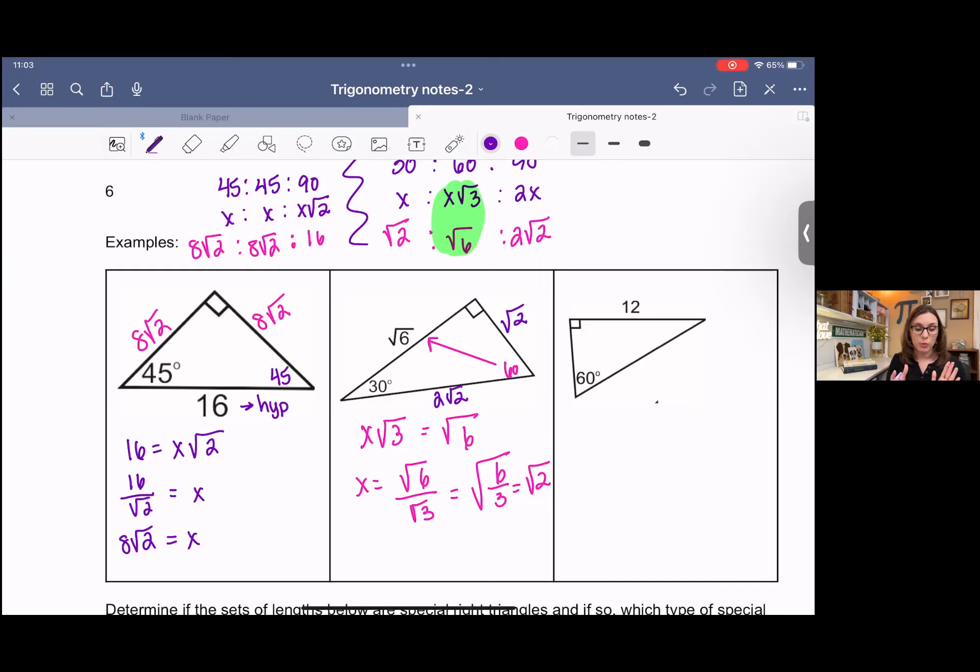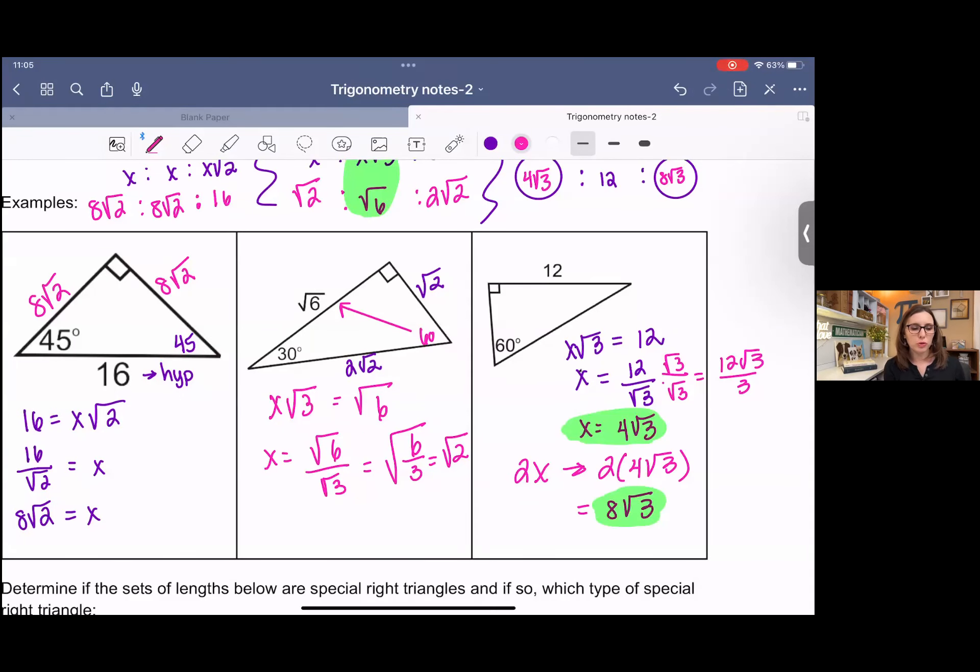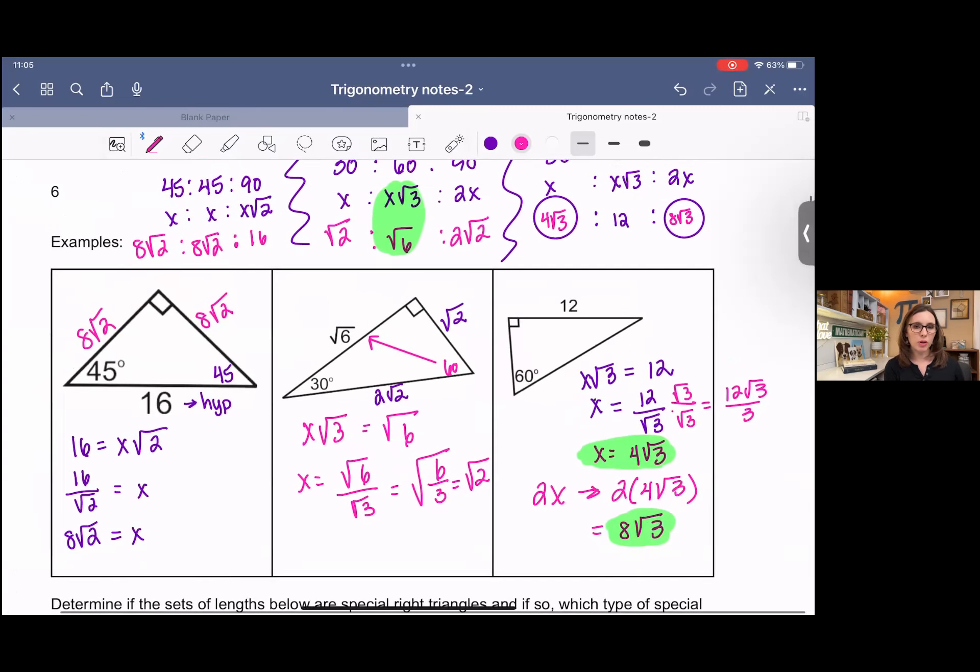So I want you to use those two examples to try to solve the third one. So pause it, try it on your own, come back, and check your work. Okay, so you are given the side across from the 60 degree angle. So you're going to use the x root 3 side of the ratio to solve for x. When you solve for x and rationalize the denominator, then simplify, you get 4 square root 3. So that is one of the missing sides across from the 30 degree angle.